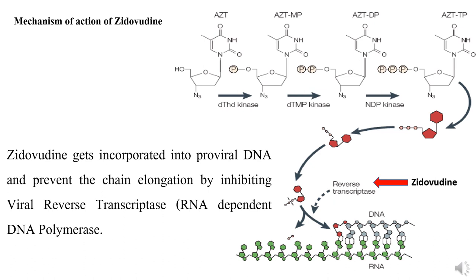In order for nucleic acid replication to occur, the 3-hydroxyl of a naturally occurring nucleoside is the acceptor for covalent attachment of subsequent nucleosides. When zidovudine triphosphate is incorporated, it acts as a chain terminator, preventing further elongation of the viral DNA.